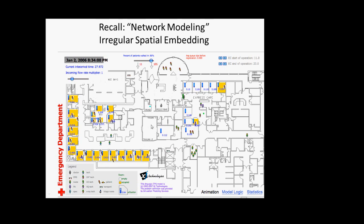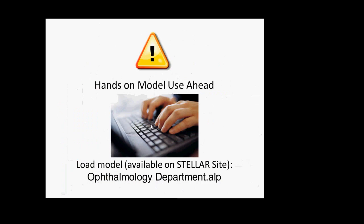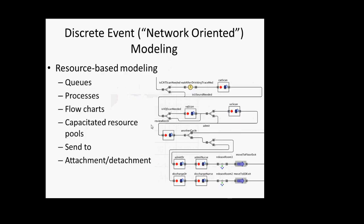What I'm going to ask you to do right now is go onto the Stellar site and obtain a model listed there under the example models called the ophthalmology department. This is actually a model that was provided as part of the sample models of earlier versions of AnyLogic, but it's not currently distributed with the latest version. You should be able to find a zip file on the Stellar site, download it, and extract the ophthalmology department ALP file, which I'd like you to open.